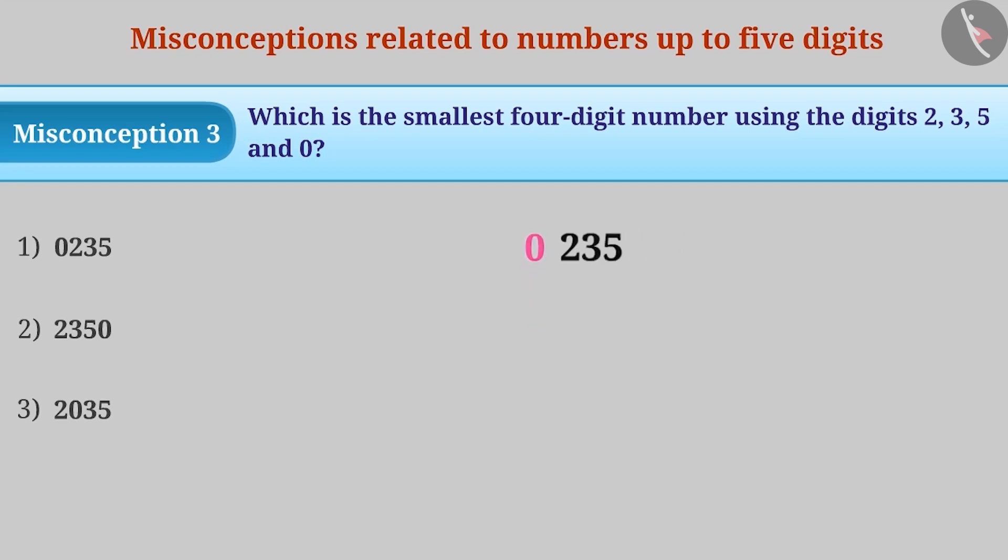When 0 is written before a number, there is no change in the value of the number. So, 0, 2, 3, 5 will be considered as 235 which is a 3-digit number.